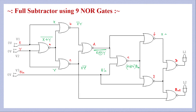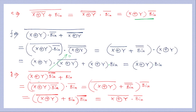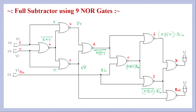At point G, there is a NOR operation between the outputs from previous gates. Applying De Morgan's law and Boolean algebra as before, the simplified output at G is (X XOR Y) AND BIN̅ — an AND operation between (X XOR Y) and the complement of BIN, which also serves as the output of that NOR gate.